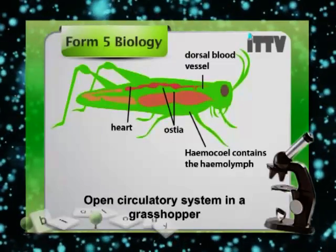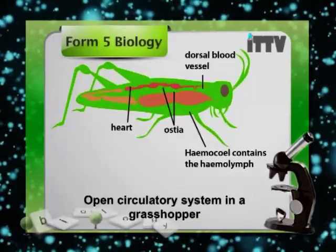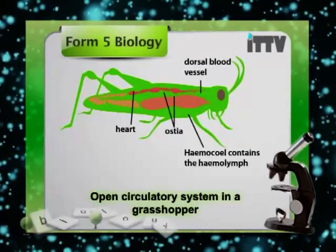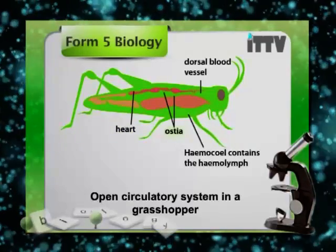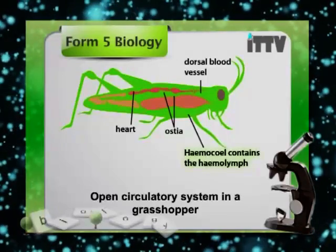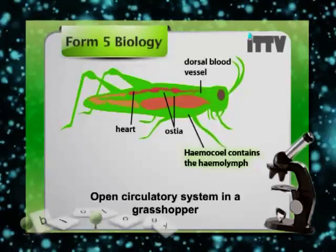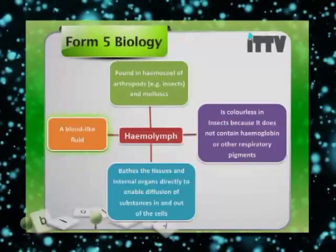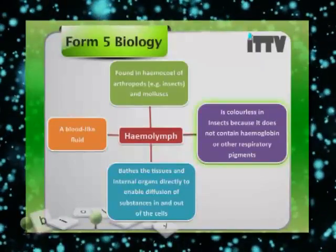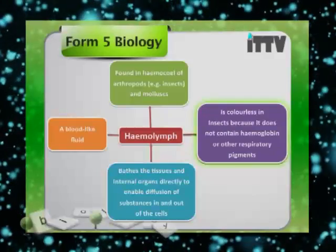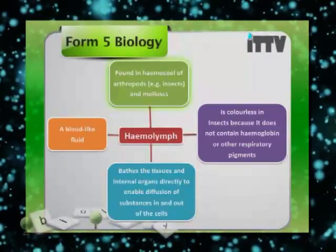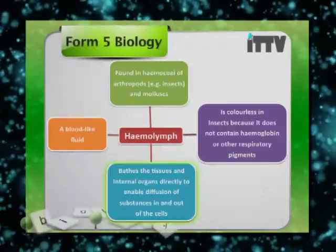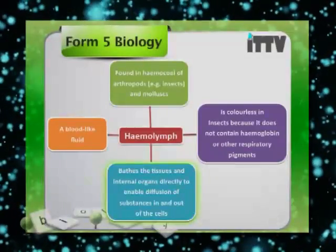This is a picture of a grasshopper. A grasshopper belongs to the arthropod family — the family of insects. It has a very unique system called the open circulatory system, whereby the heart has pores called ostia which pump the haemolymph — the blood-like fluid — into a cavity called the haemocoeel. This supplies all the nutrients to the various parts of the grasshopper. Haemolymph is a blood-like fluid but it is colorless in insects because it does not have any haemoglobin or other respiratory pigments. It is found within the haemocoeel — the cavity within the arthropods — and directly bathes the tissues and internal organs, enabling diffusion of substances in and out of the cells.